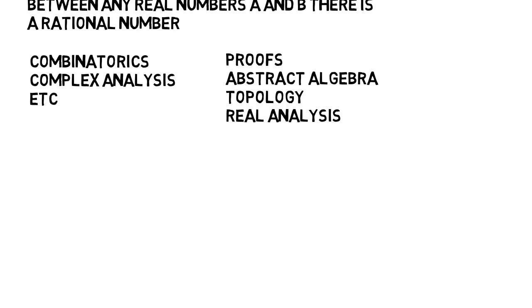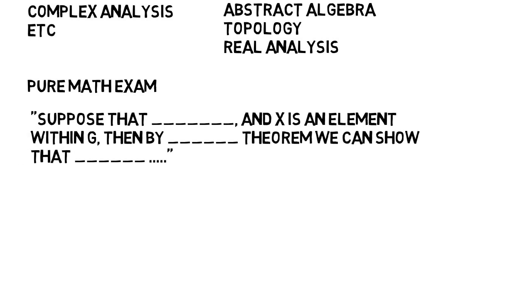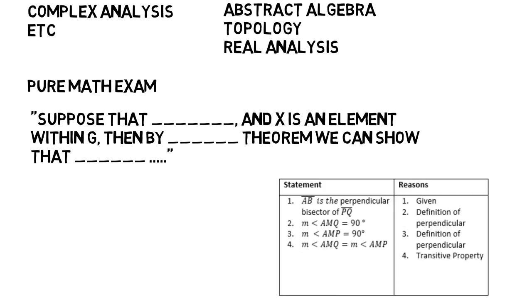And the proofs in these classes might not be what you think. If you look at a pure math exam, you would see plenty of math and symbols, but you would also see a lot of sentences. You might see things in the solutions like, suppose that something, like h is a subgroup of g, and x is an element within g, then by some theorem we can show that, and so on and so forth, as you work your way to a solution. But you will have to construct these proofs during exams on your own. Unlike in geometry, the proofs you do in college are not as structured like step 1 and step 2. It's not just computation either, like the math you've been doing. You have to use logic and reasoning to reach a conclusion.